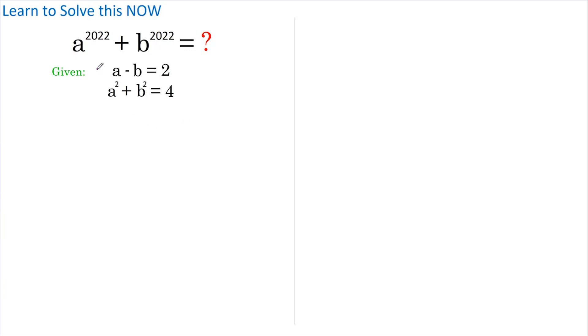Let's start by taking equation number 1 and squaring it. This gives us a squared minus 2ab plus b squared equals 2 squared.